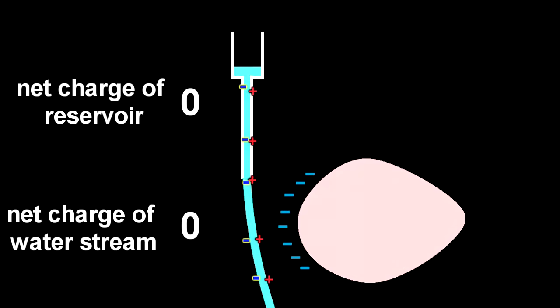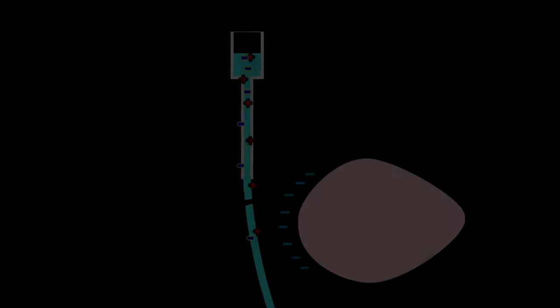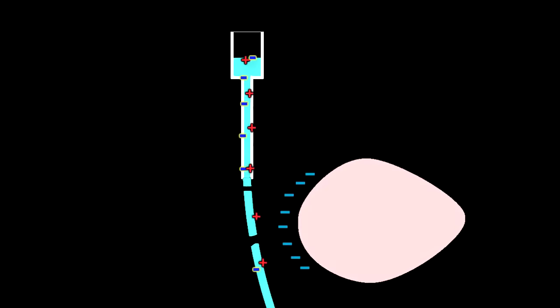Now this does sort of fit together in a more coherent picture. That is when the balloon is near the solid stream, the water molecules and the residual ions rearrange themselves electrostatically, kind of like magnets do. And this creates an attractive force between the water and the balloon. However, when the electric field is much nearer to where the stream is becoming droplets, the Veritasium explanation does seem to be the one with predictive capability. So is this now a better explanation for what's going on here?